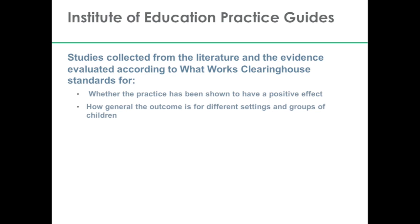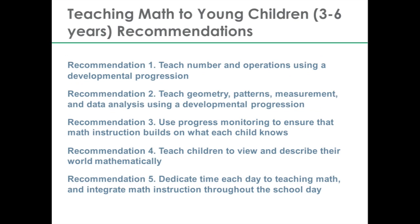The second criterion was how general is the outcome for different settings and different groups of children. In other words, was the practice tested for only one selected group of children, or has the practice been tested across different children in different locations with different backgrounds so that we can make broad statements about what's an effective practice? Those are the requirements that What Works Clearinghouse uses and the ones we adopted for this particular practice guide.